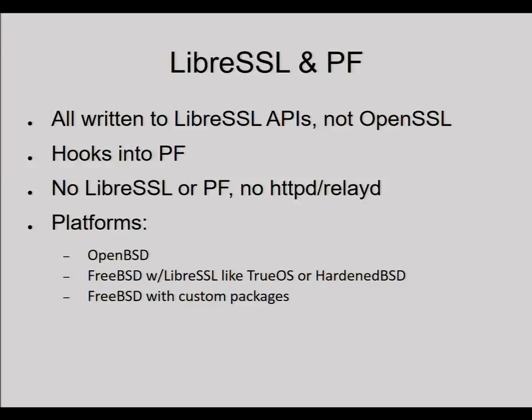The server applications are all written with LibreSSL APIs, not OpenSSL APIs. They're doing some work on RelayD to bring it into that state now, and all of this stuff hooks into PF. This means if you don't have LibreSSL or PF, you don't get this stack of applications. You can run this on OpenBSD out of the box, or on a FreeBSD derivative like TrueOS or HardenBSD. The farther you get from OpenBSD, the more interesting your results may be.